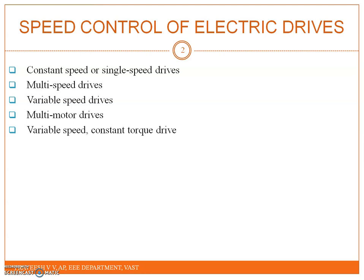A variable speed drive is called a constant torque drive if the drive's maximum torque capability does not change with the change in the speed setting.